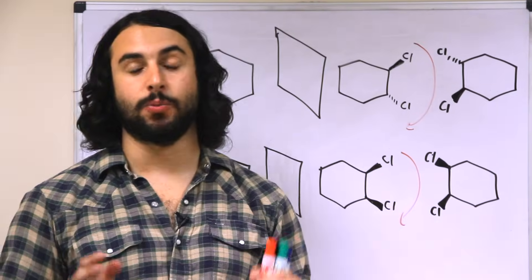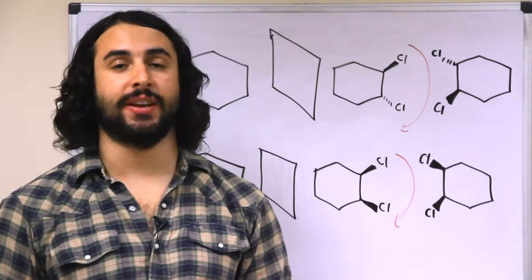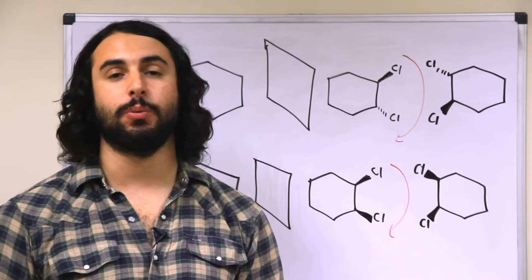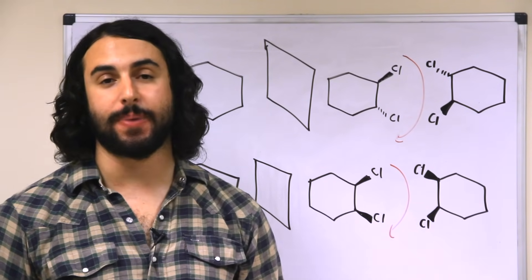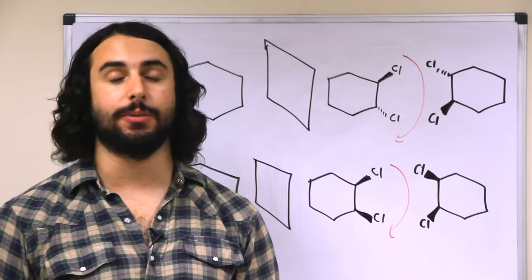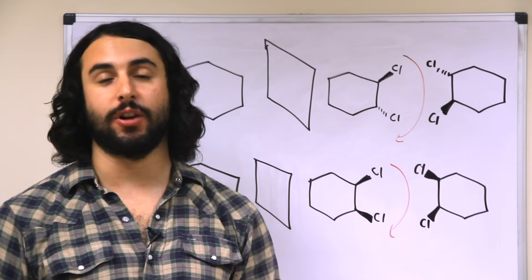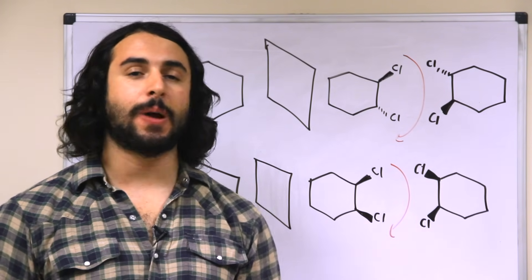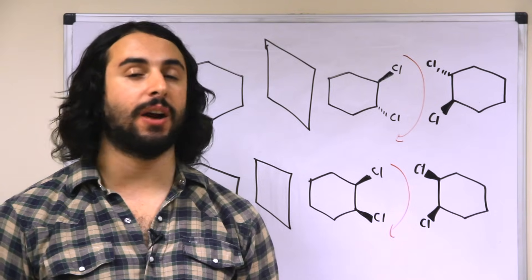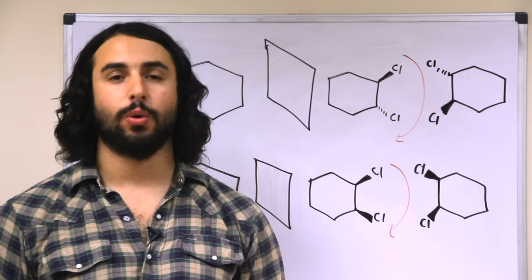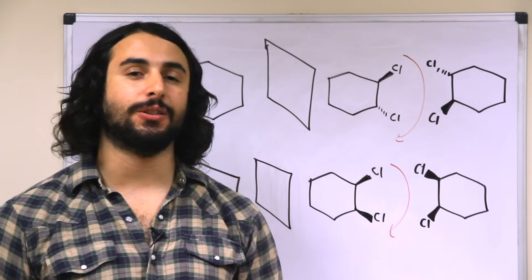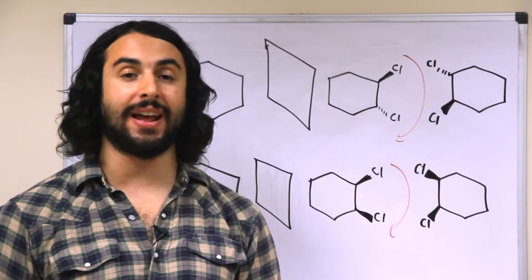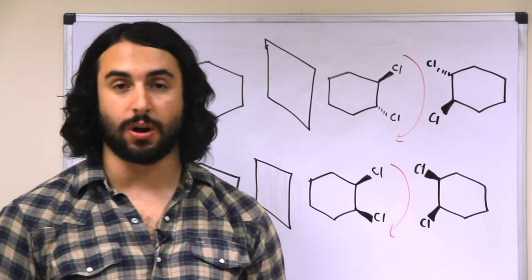If a compound has one chiral center, it is chiral overall and will exist as a pair of enantiomers — one having R configuration, the other having S. But if a compound has two or more chiral centers, we're going to have to analyze a little bit further to tell if a molecule is chiral or achiral overall.